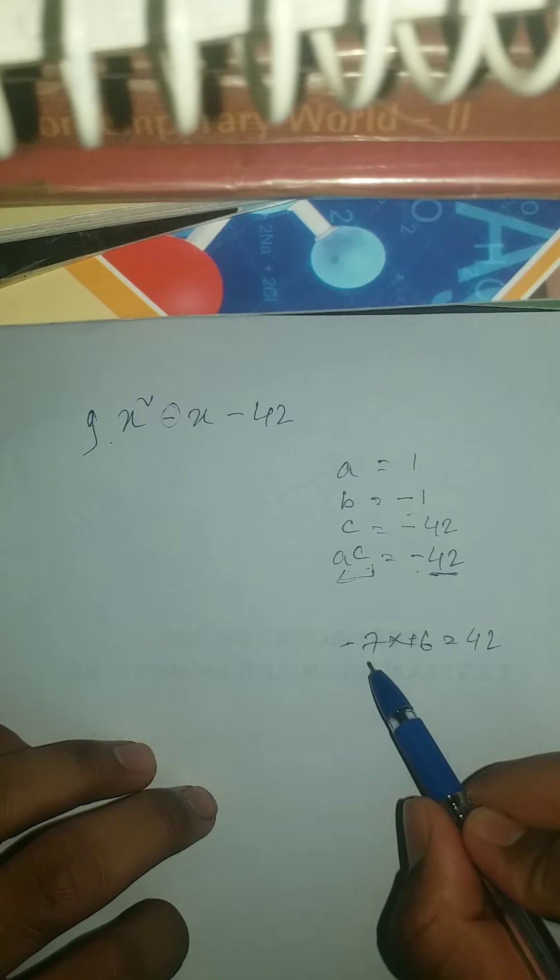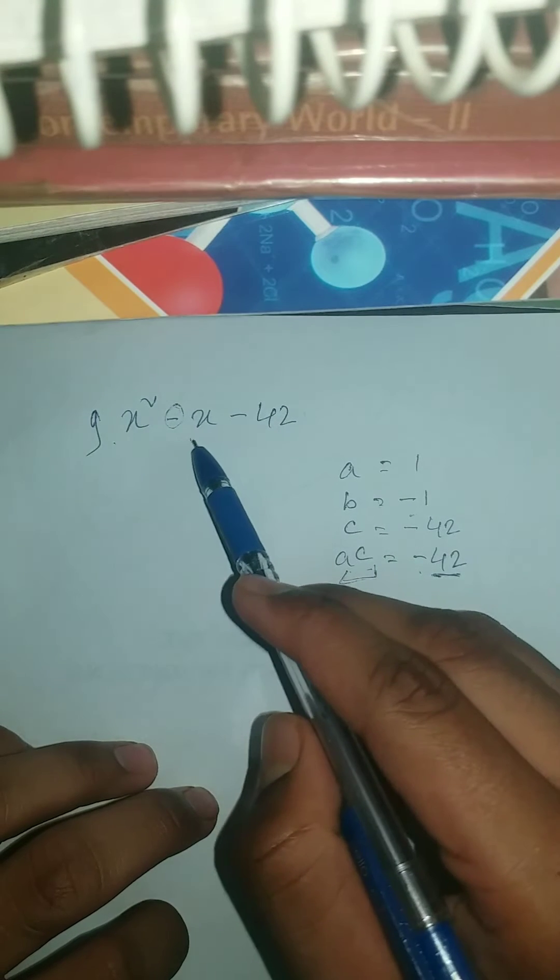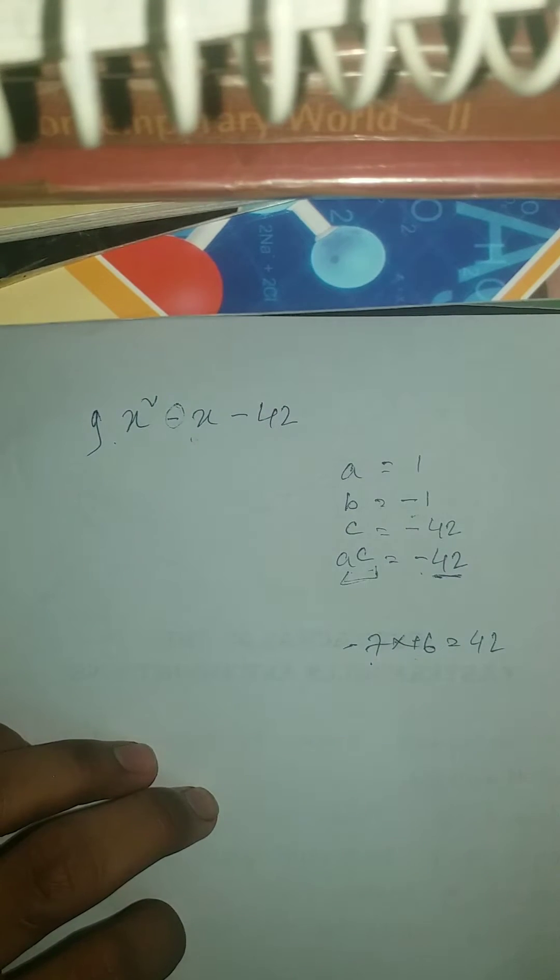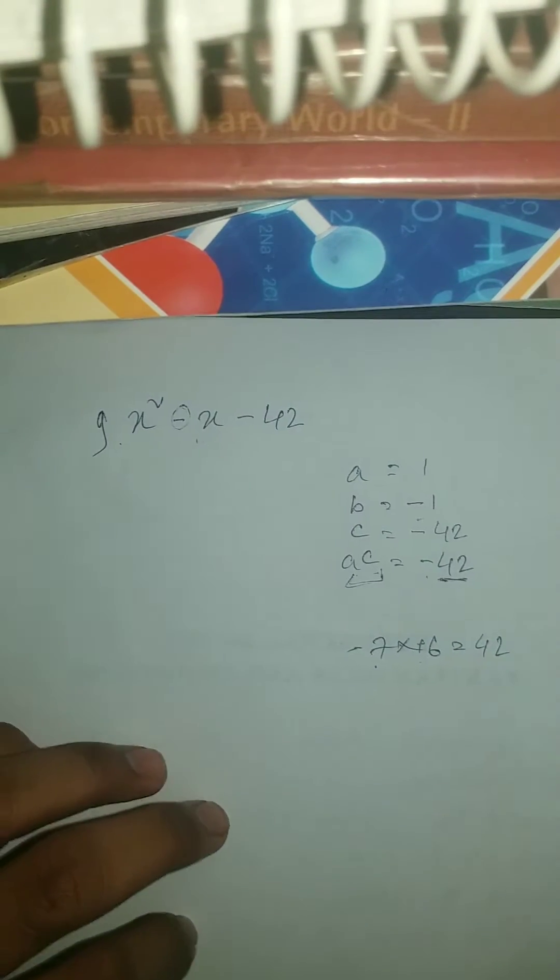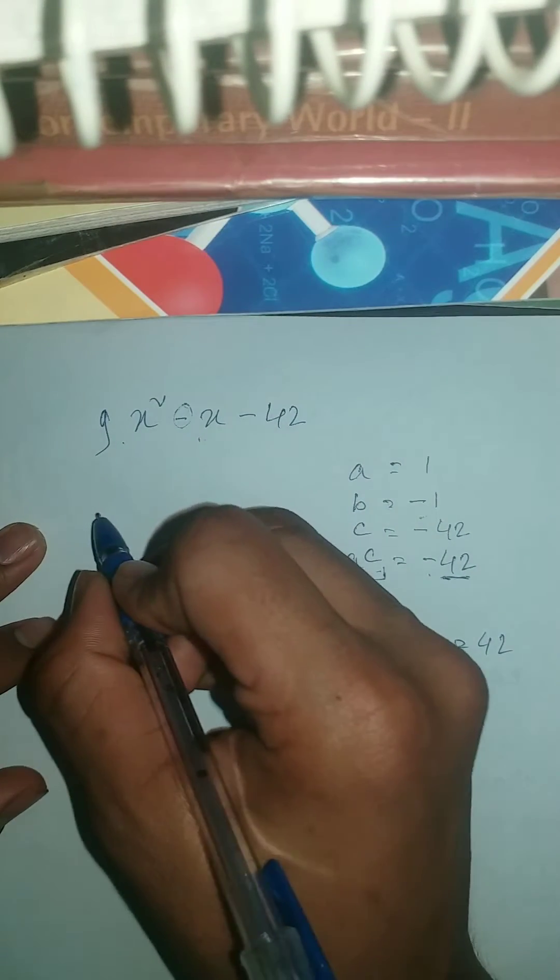Minus 7 plus 6 is minus 1, which is your minus 1x. And minus 7 into plus 6 is minus 42. So we got it right.